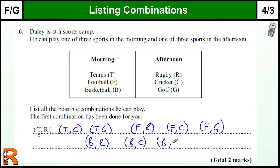So as long as you keep one thing the same and change the other option — or if you have to pick three things, keep two of them the same and change one option — just keep changing one thing at a time and you can build up all the possibilities that way. Here we've got six possible answers.